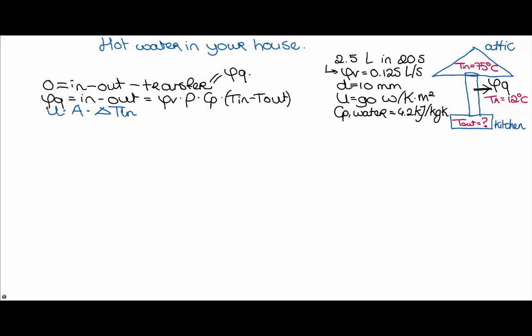So VQ equals the volume flow times the density times Cp times T in minus T out. We know from the theory lecture that this area has to be the area of the pipeline where heat is flowing out, which is π times D — that's the diameter of the pipe — times the length of the pipe. But we don't know the length of the pipe.